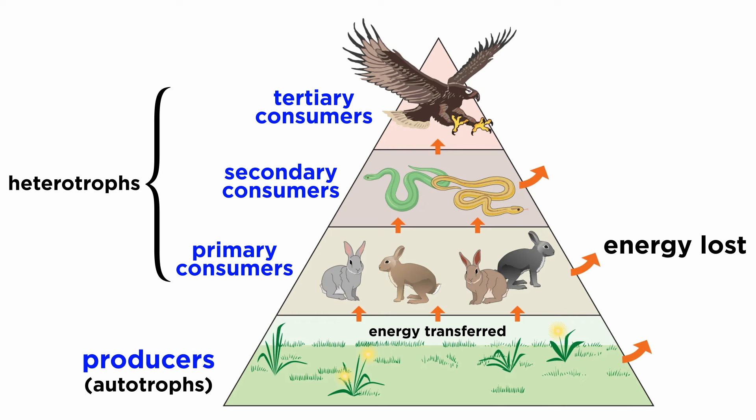In this way, all the consumers, or heterotrophs of an ecosystem, including herbivores, carnivores, and decomposers, rely on the ecosystem's producers for energy. If the producers were removed, the community would collapse.